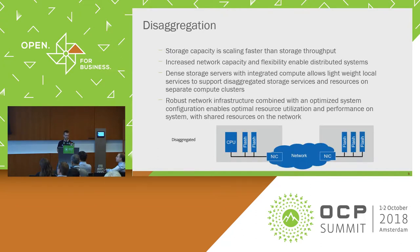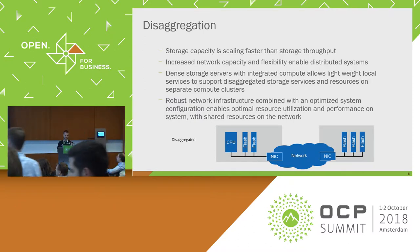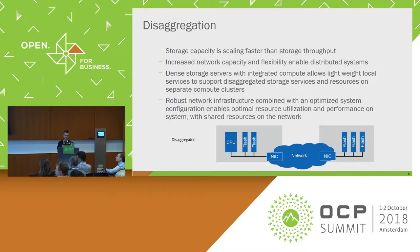For disaggregation, storage capacity is scaling faster than throughput, so we're going to need increased network capacity and flexibility of systems to enable disaggregated storage and dense storage servers. Integrated compute allows lightweight applications to run on the server and have higher power services on compute servers elsewhere. Robust network infrastructure allows you to make an optimized system for better resource utilization and share resources on the network.